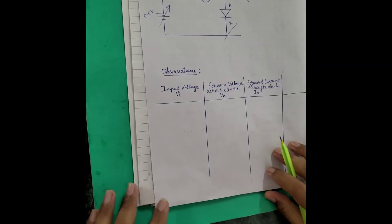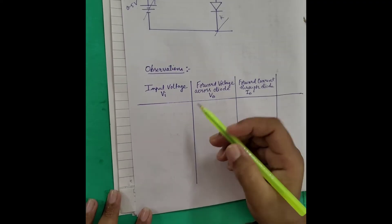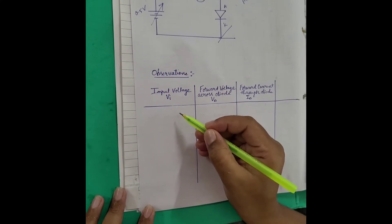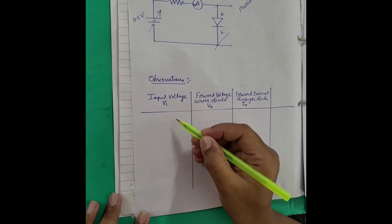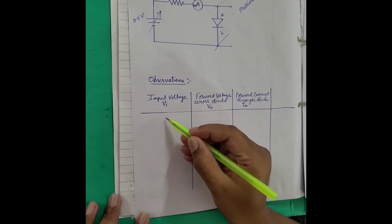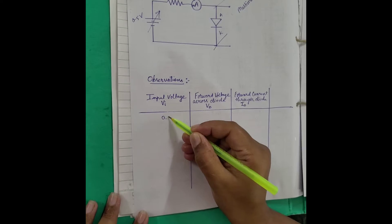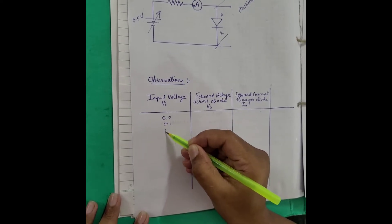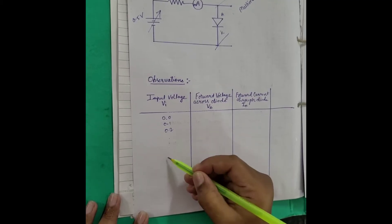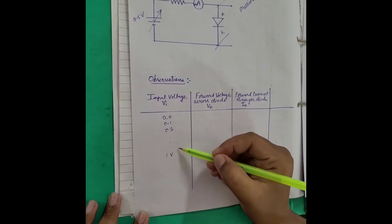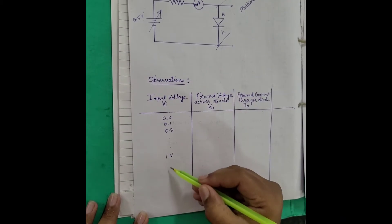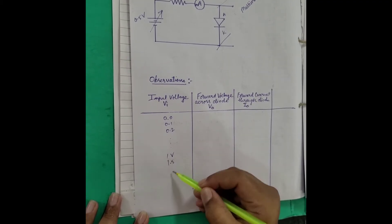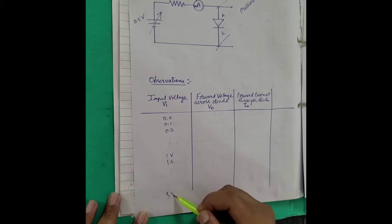The observation we are going to take is: we will be varying the voltage source from 0 to 5 volt. The step size will be 0.1, 0.2, up to 1 volt. Then after 1 volt, we will be varying the step size to 1.5 and so on till 5 volt.